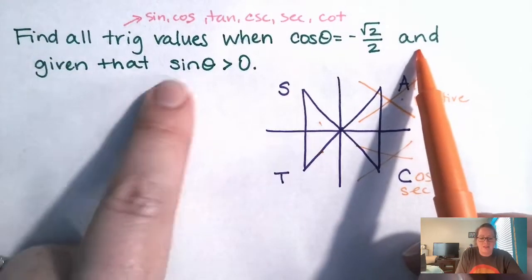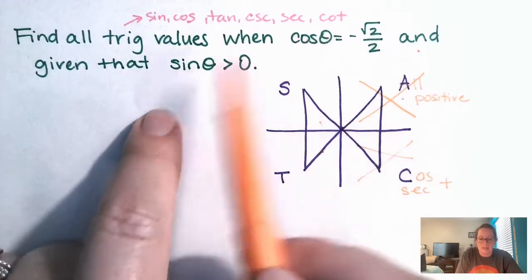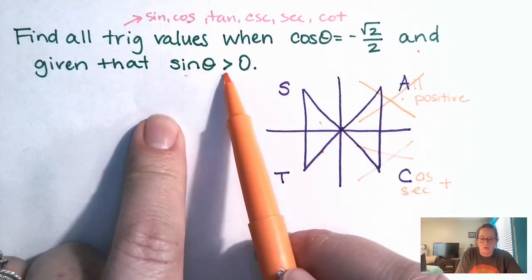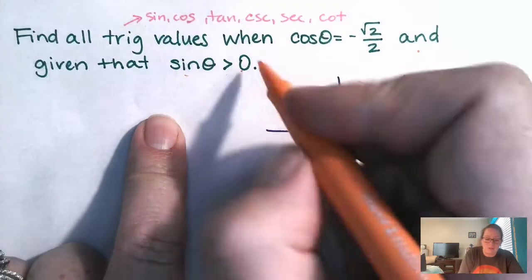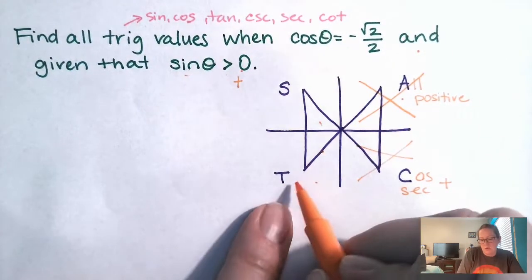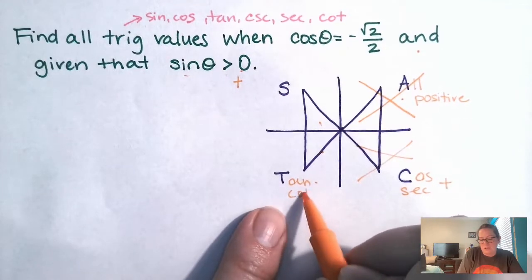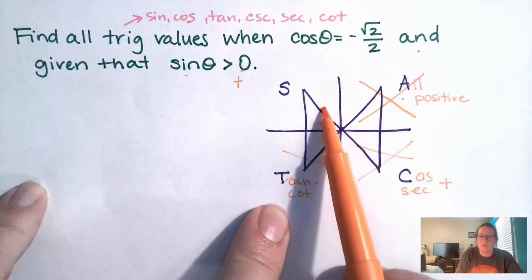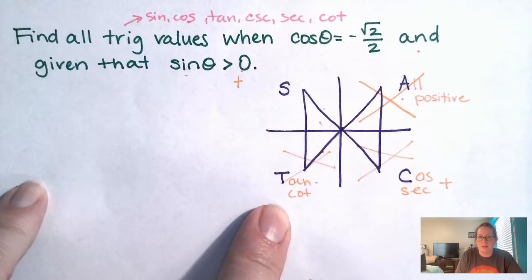Which is why they gave us a little bit more information too. It says sine theta is greater than zero. Well, greater than zero means it has to be positive. So it can't be positive here because only tan and cotangent are positive here. So we're living in quadrant two is all that means.